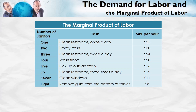This table shows how a restaurant like McDonald's might think about hiring janitors. The first janitor is assigned to the most important task — cleaning the restrooms once a day. That task adds $35 an hour to the firm's revenues, because customers like restaurants with clean restrooms. The second janitor empties the trash. The third janitor hired will also be assigned to cleaning restrooms, now done twice a day, and that use increases revenues by less — by $24 an hour.